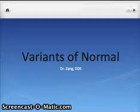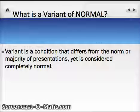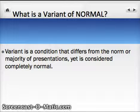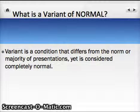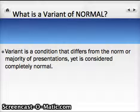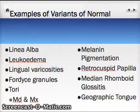So what are variants of normal, you ask? A variant of normal is a condition that differs from the norm or the majority of presentations, and yet it's considered completely normal. That seems like a contradiction, but there are many people who have an unusual or odd presentation of a condition, but it is still considered normal.